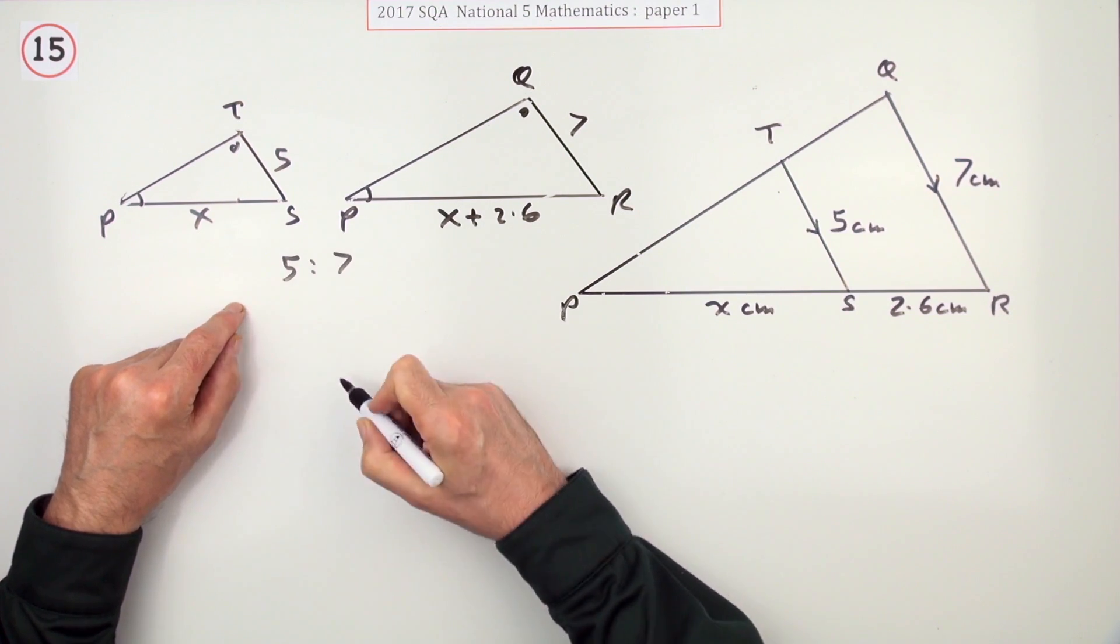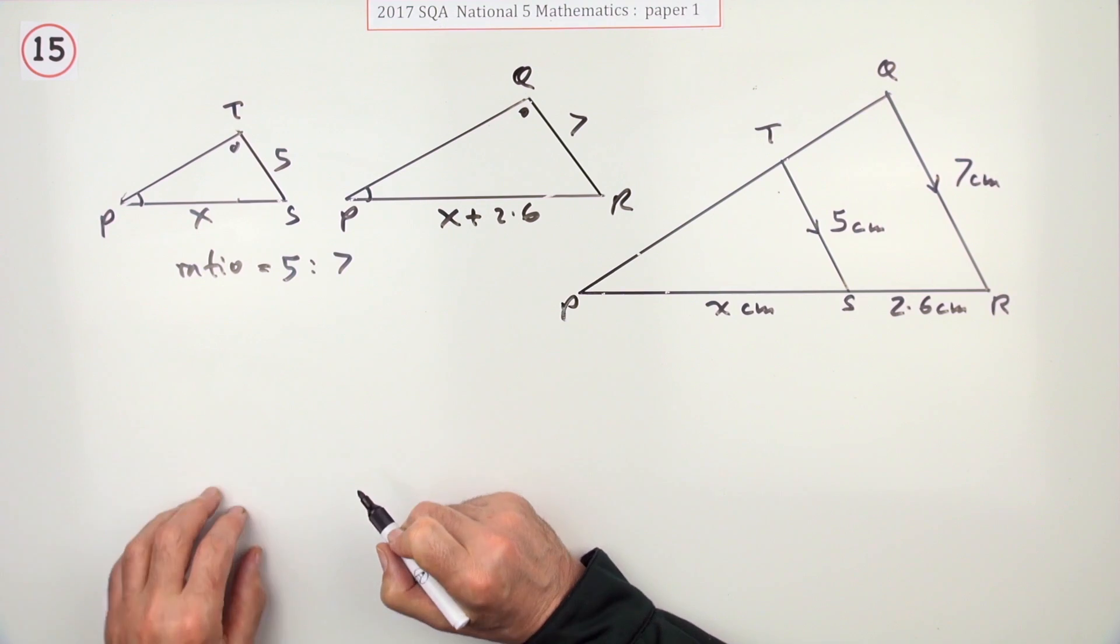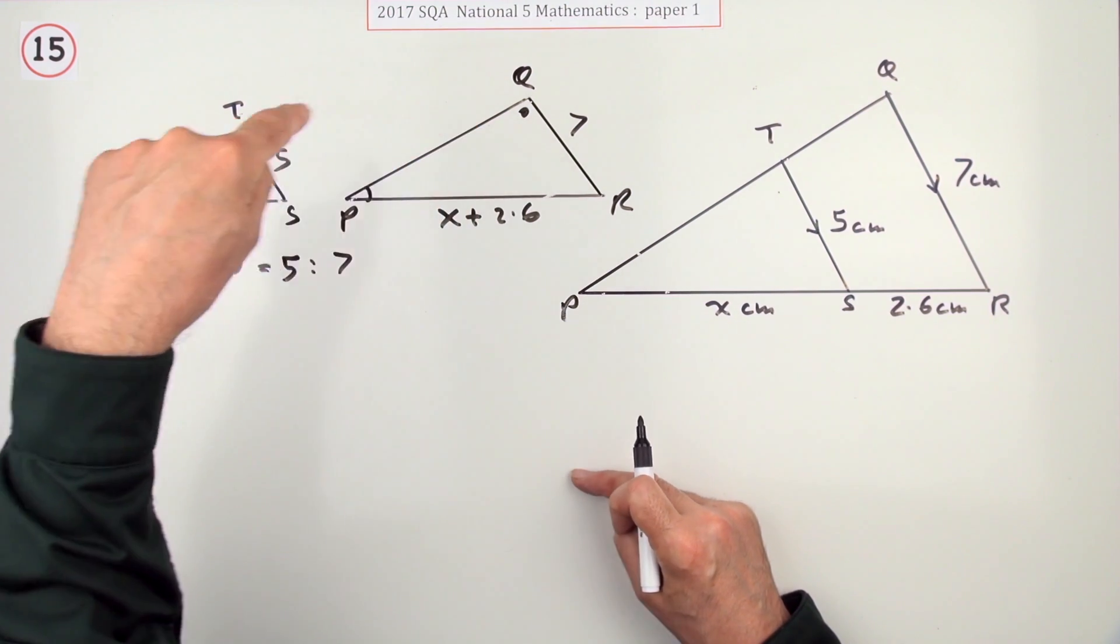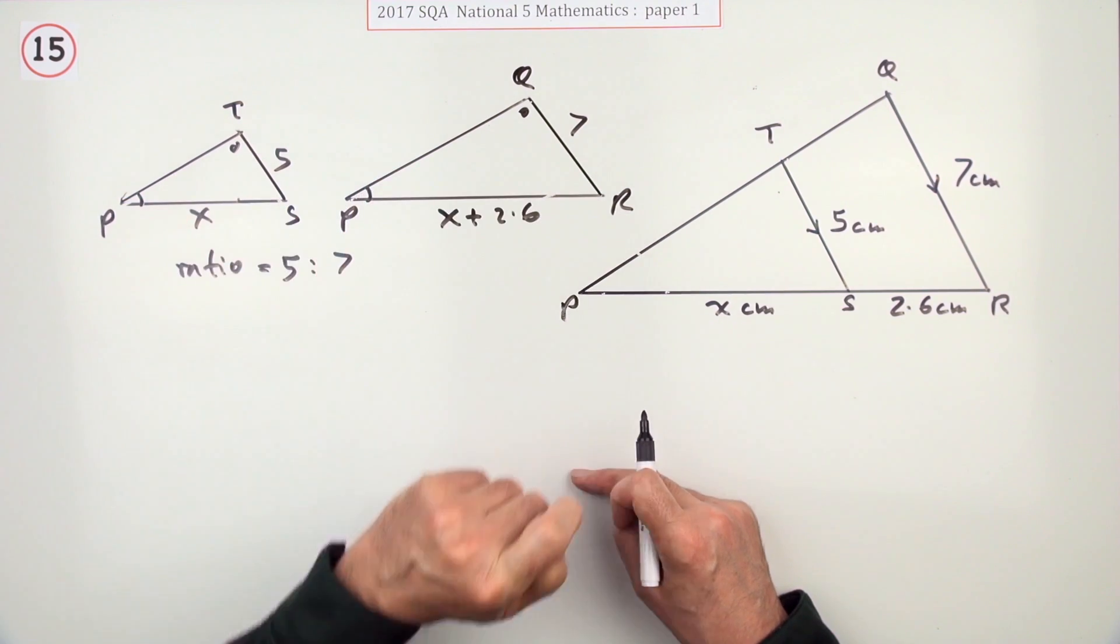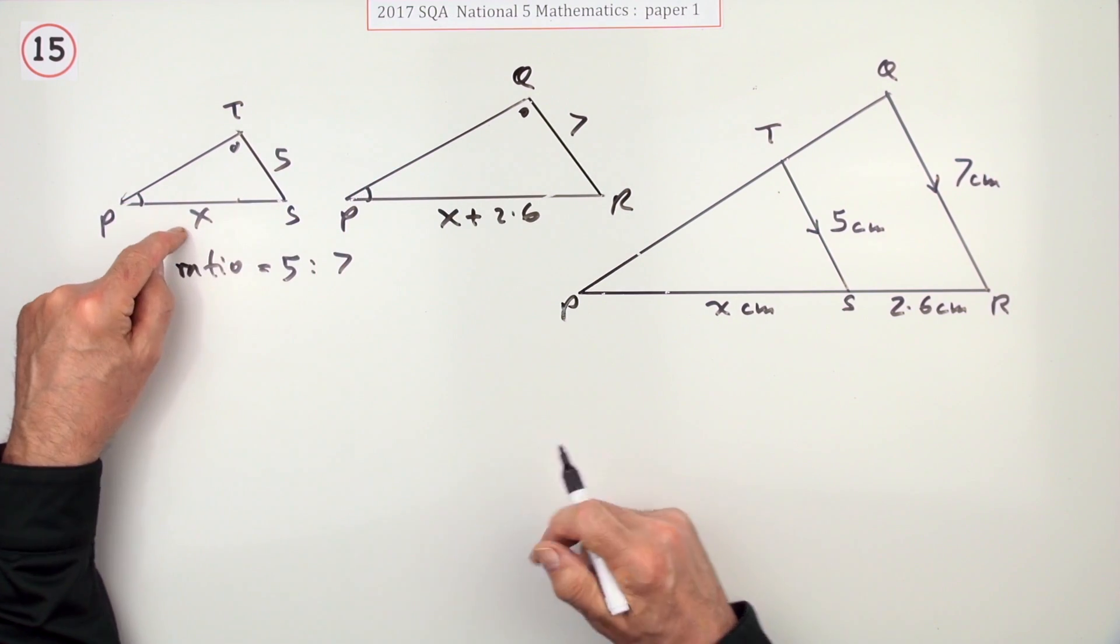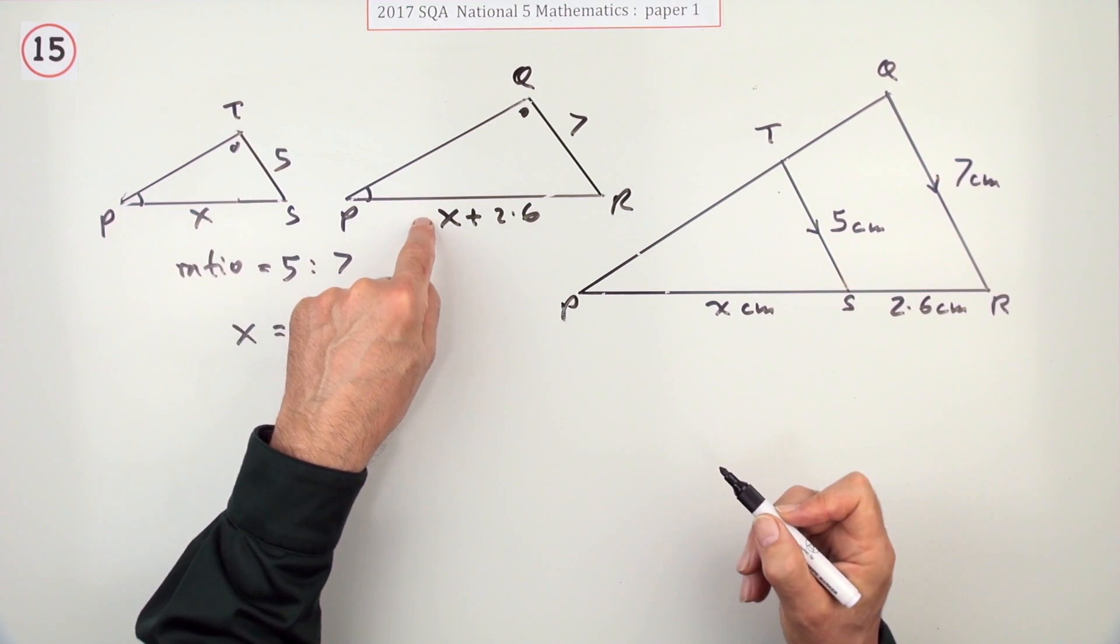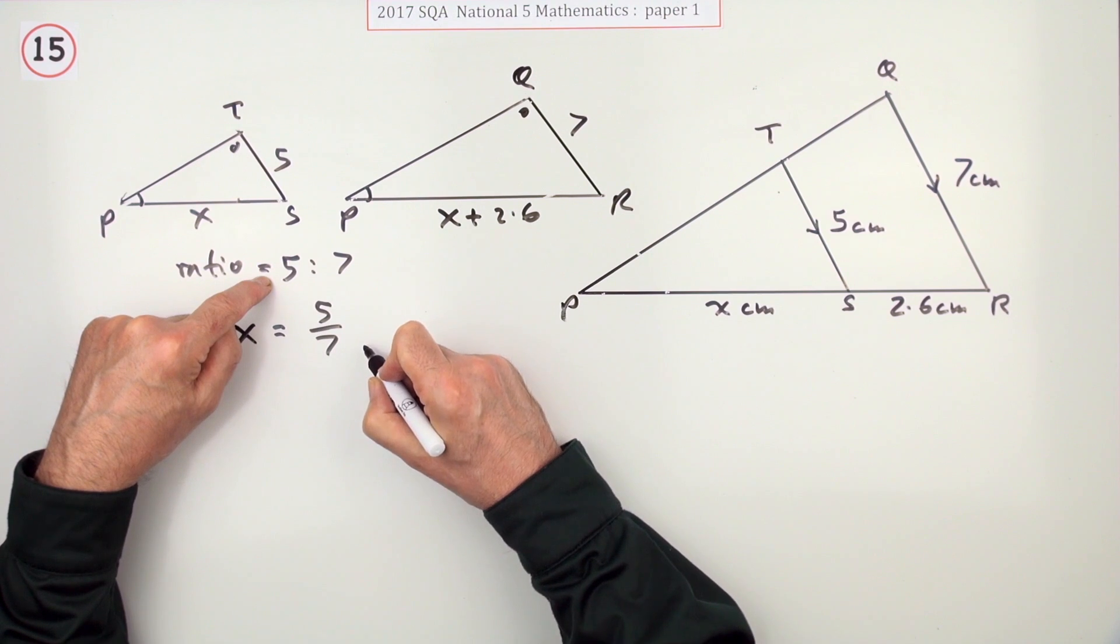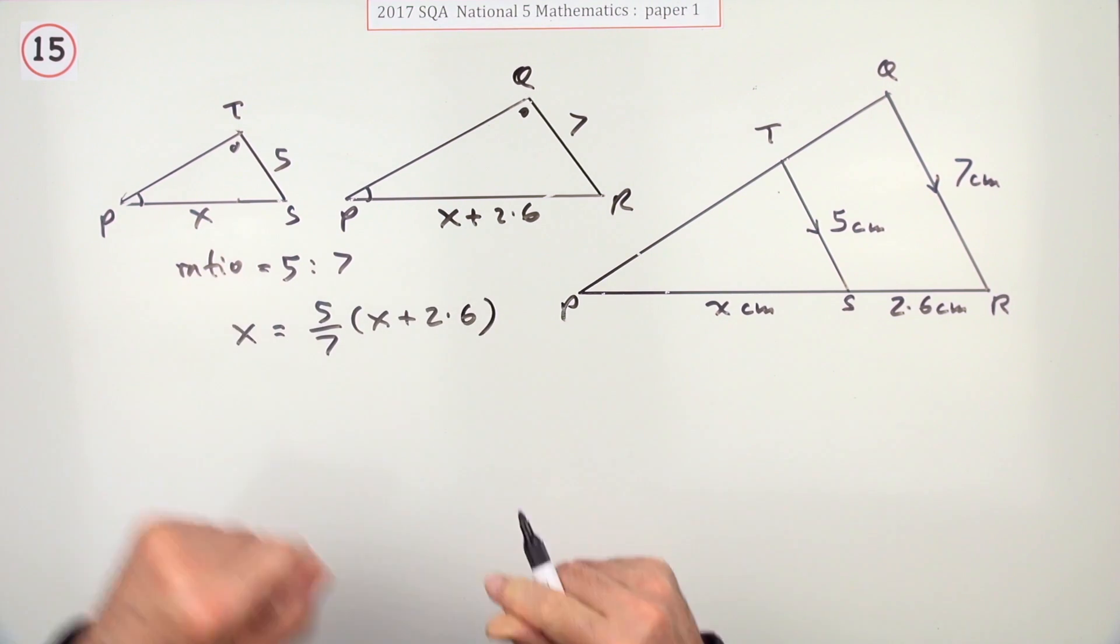Which means that this triangle is 7 upon 5 times that. Or this triangle is 5 upon 7 times that one. They'll just start with this one. So this length is smaller than that length. And the ratio here says it's 5 sevenths of it. It's 5 sevenths of x plus 2.6.